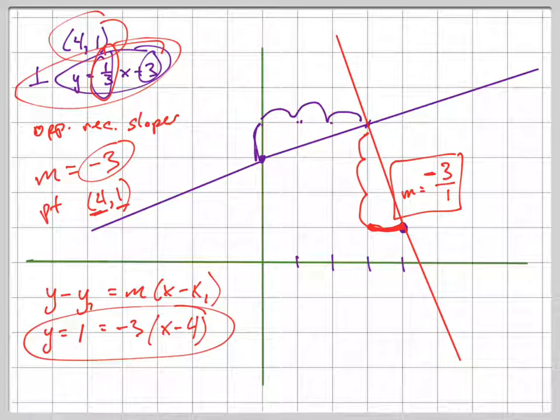Now, if they wanted you to write it in slope-intercept form, you're not done yet - you'd have to do a little bit more. What you would have to do is distribute that negative 3 in, carefully.